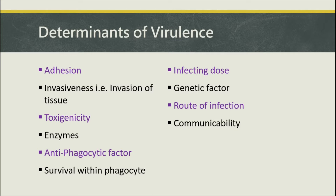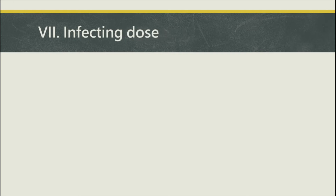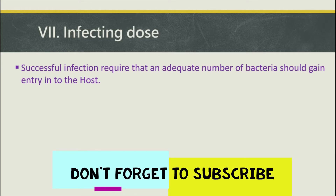Today we are going to discuss the infecting dose, genetic factor, route of infection, and communicability. For successful infections, an adequate number of bacteria must gain entry into the host. The infecting dose is the optimal number of bacteria that, if they enter the body, can establish the infection and result in disease.